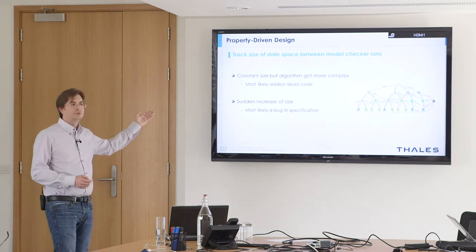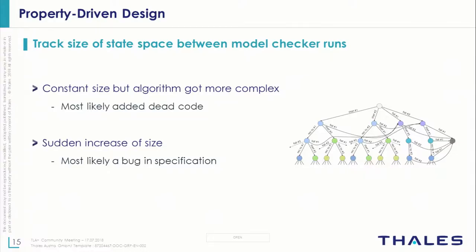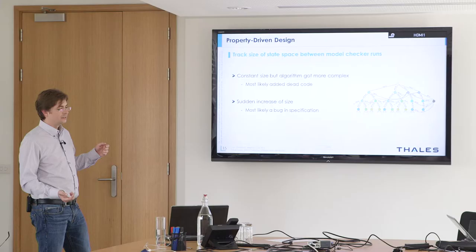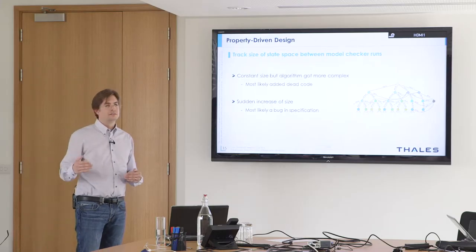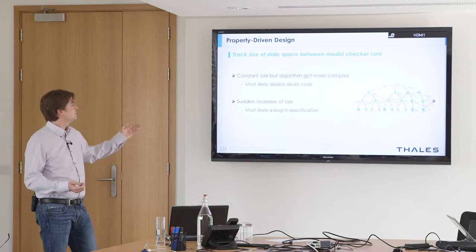Tracking the state space between individual model checker runs gives feedback on whether an addition is actually exercised. If the state space didn't grow, maybe what you added isn't being evaluated. A sudden large increase in state space on smaller modules likely indicates something wrong with what you just specified — you develop a feel for how much it grows step to step.